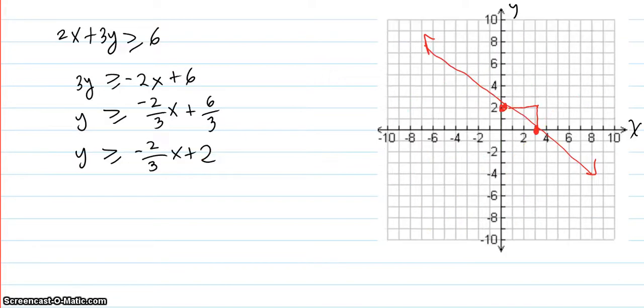Now we're going to continue on with another example. 2x plus 3y is greater than or equal to 6. So we use the same technique. We subtract 2x from both sides. So it knocks off of the left and appears over here on the right as negative 2x, and we have the plus 6. Now we're here.